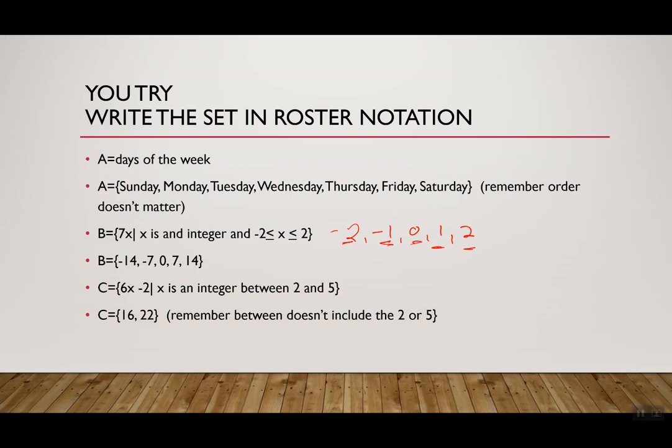Same thing happens with C. I gave you the set of 6x - 2, where x is an integer between 2 and 5. Between 2 and 5, remember, this doesn't include 2 or 5. So I'm not doing 2, I'm not doing 5. The only numbers between 2 and 5 that are integers are 3 and 4. So that's lucky, because that's not a lot of work. So I have 6 times 3, and then minus 2. So 18 minus 2 is 16. Then I have 6 times 4 minus 2. So that's 24 minus 2 is 22. So that's where I got these two elements, 16 and 22.